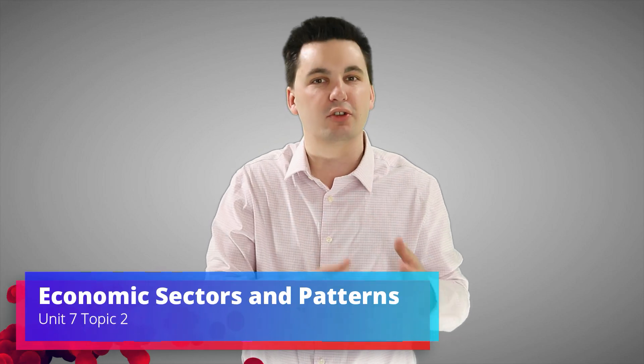Today, we're going to be continuing our conversation with Unit 7 of AP Human Geography. We're going into Unit 7, Topic 2, Economic Sectors and Patterns. When looking at the economy, we can see that we have different classifications for production.